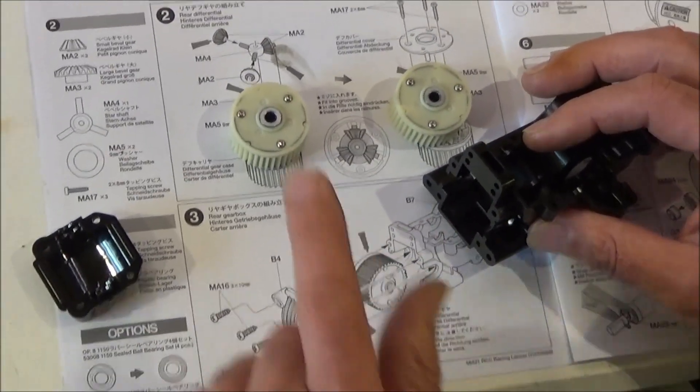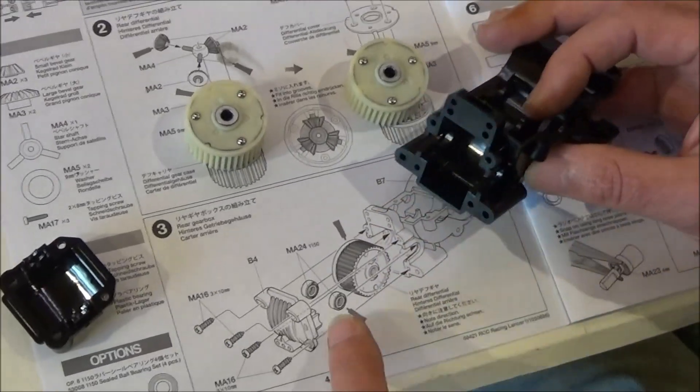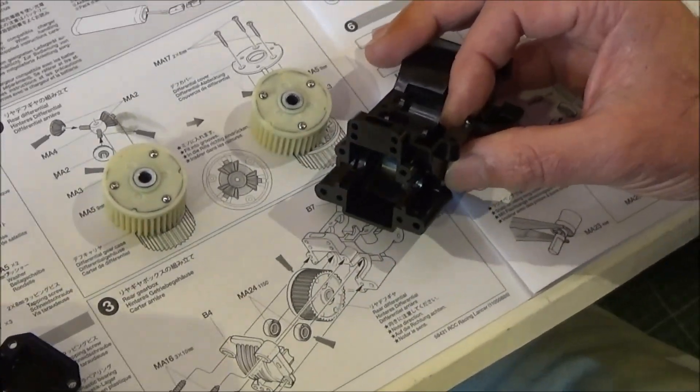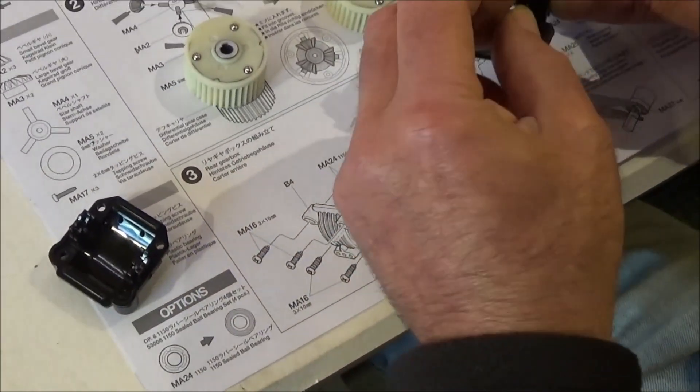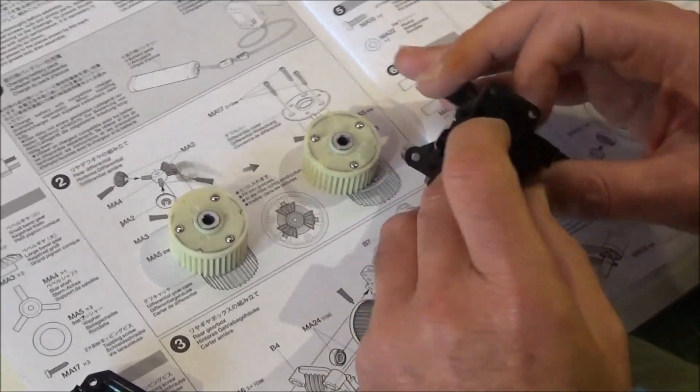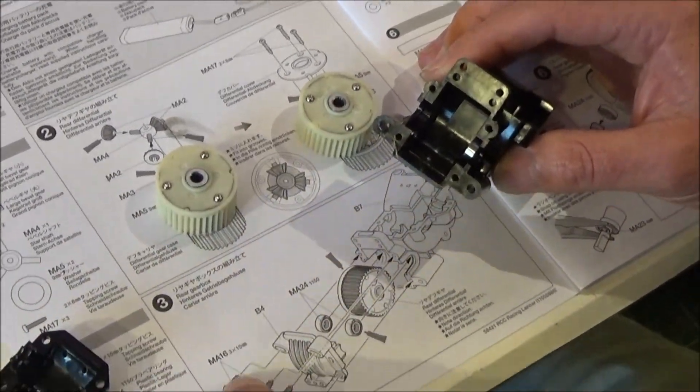Next step is step three, we're going to fit one of the differentials into B7. Grease up the outside, put in my lovely metal bearings because I can't stand those bushes as you know.